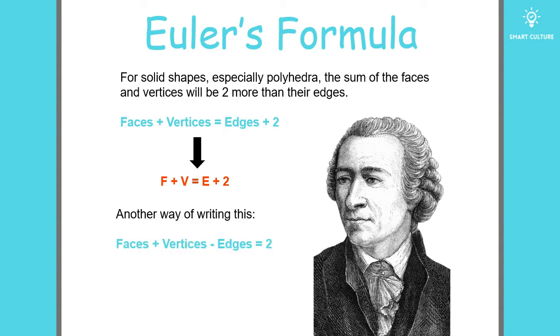Another way of writing this is, of course, the faces plus the vertices minus the edges is equal to two. In short, F plus V minus E is equal to two.